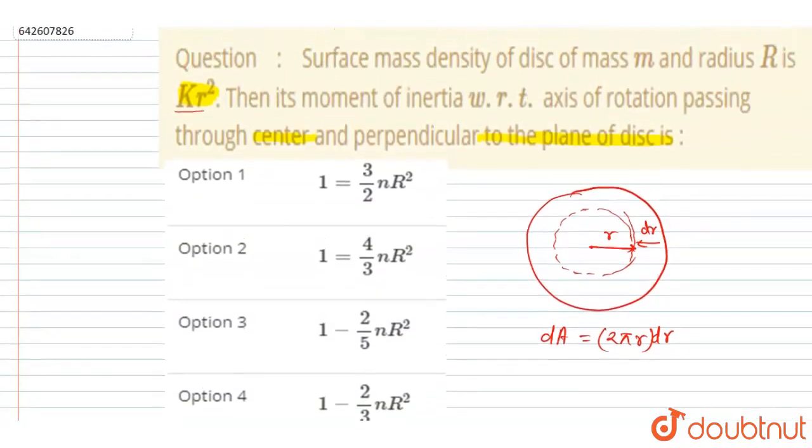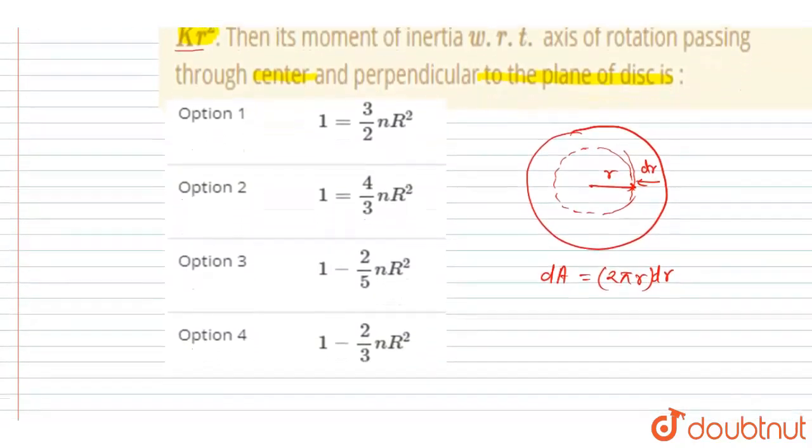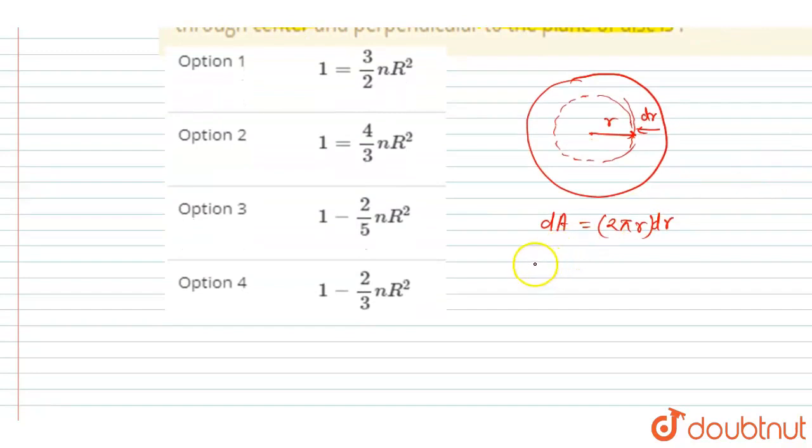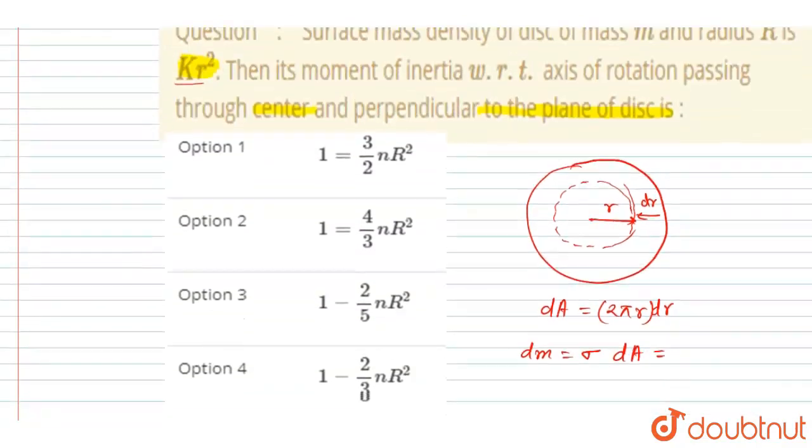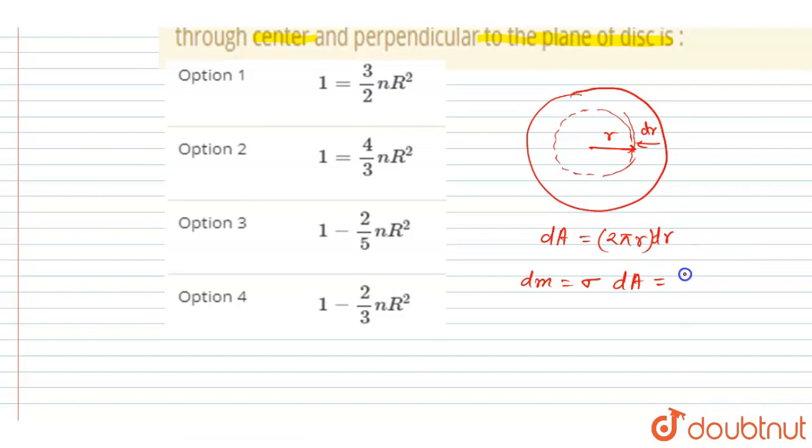Now it is given that surface mass density is kr square, so the mass of this ring will be σ dA, and σ here is given, if you see, kr square. So just put the value of kr square, bringing the constant outside, so kr square, it will be r cube dr. So after integrating this expression, you will get the mass of the disk.